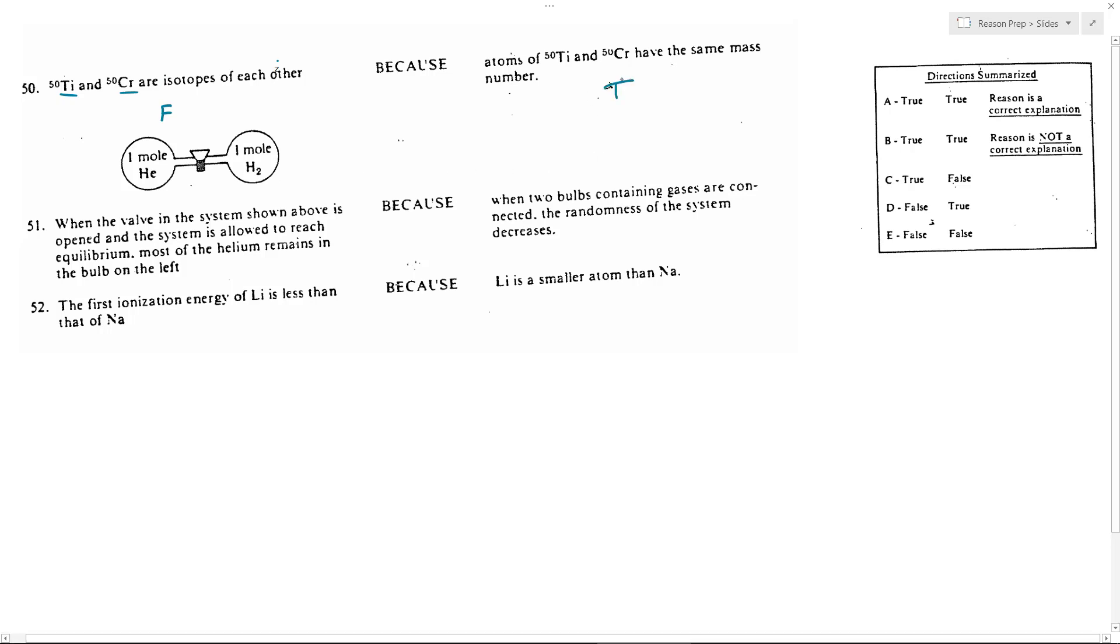They do have the same mass number, the same atomic weight. I guess probably better to call that mass number because it's the rounded version. It's 50 and 50. So that is true, but this is going to be false true. So therefore, for 50, we're going to get D.